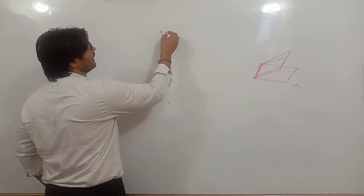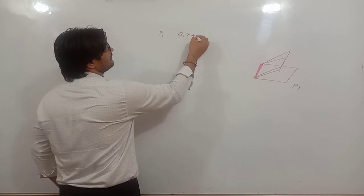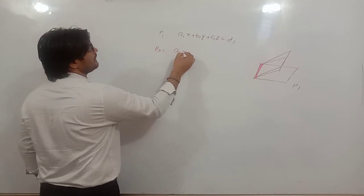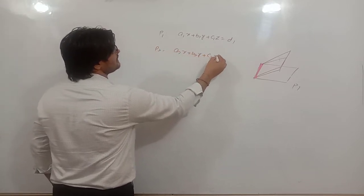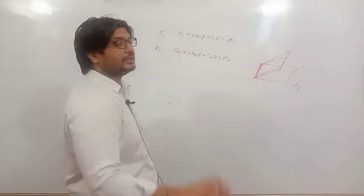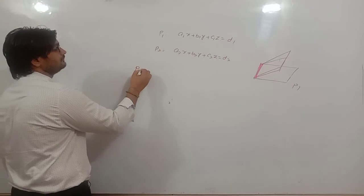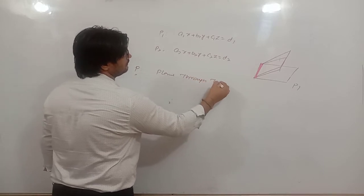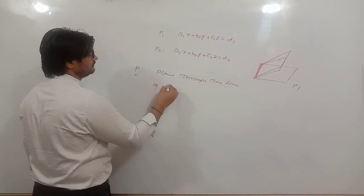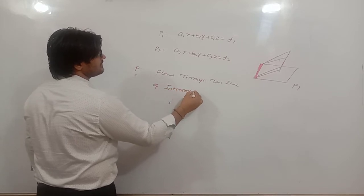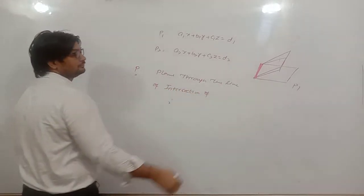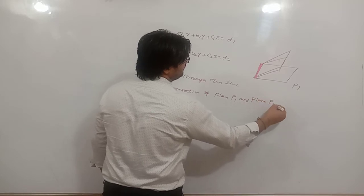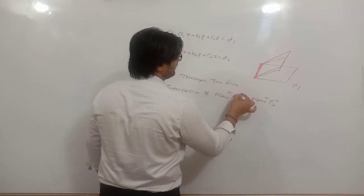Suppose there are two planes. Say A1x plus B1y plus C1z is equal to D1, and the second plane is say A2x plus B2y plus C2z is equal to D2. And you have to find the equation of a plane P, which is the plane through the line of intersection of plane P1 and plane P2.